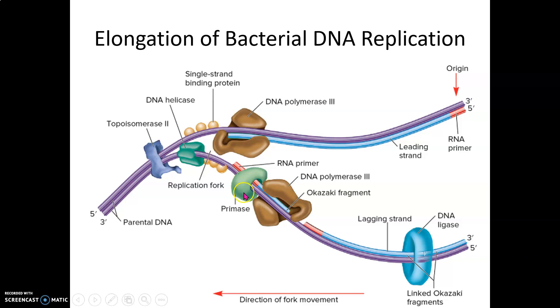Primase comes in and lays down an RNA primer—a short RNA sequence necessary for DNA polymerase to do its job. After the RNA primer is laid, DNA polymerase III comes along and elongates the sequence from that primer. On the leading strand, this is a continuous process because it's adding in the five prime to three prime direction.